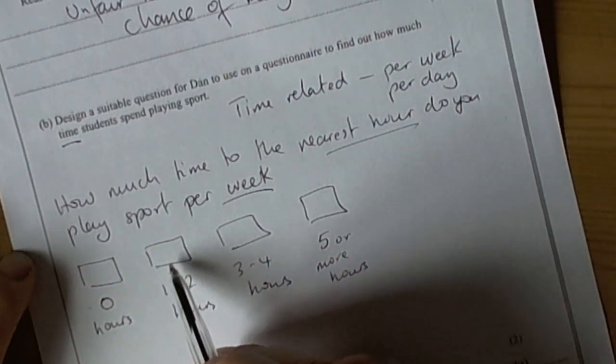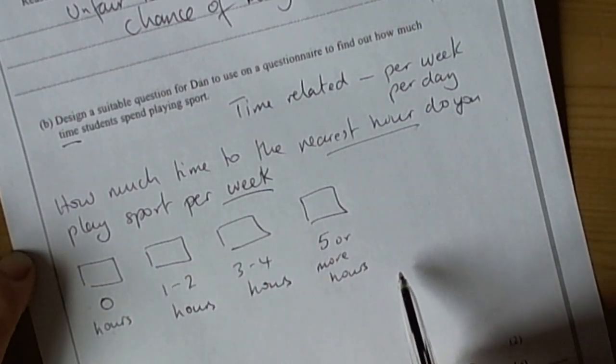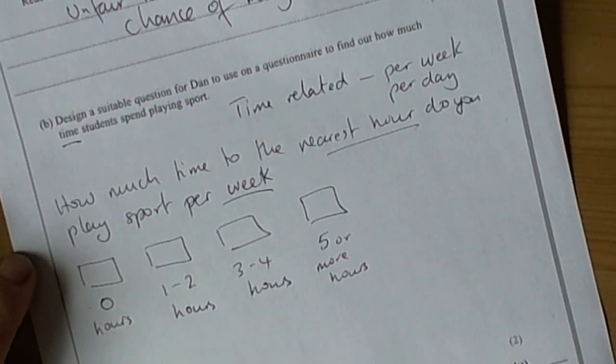Again, we're being specific here because we've set to the nearest hour. So, it's over zero hours, one to two hours, three to four and so forth. And this allows everybody to tick just one box only. So, that's a good question.